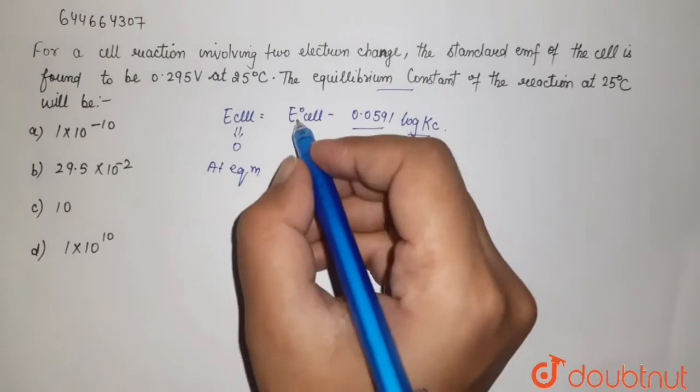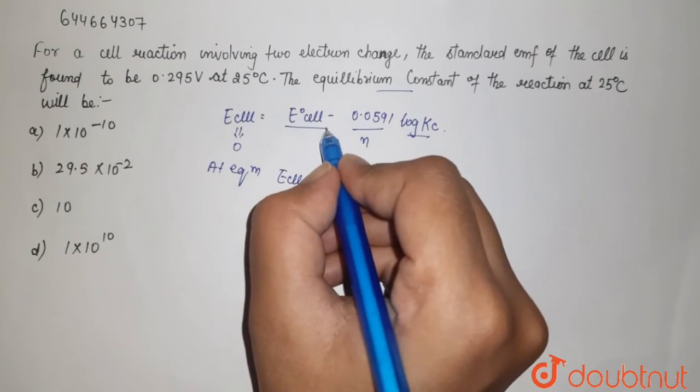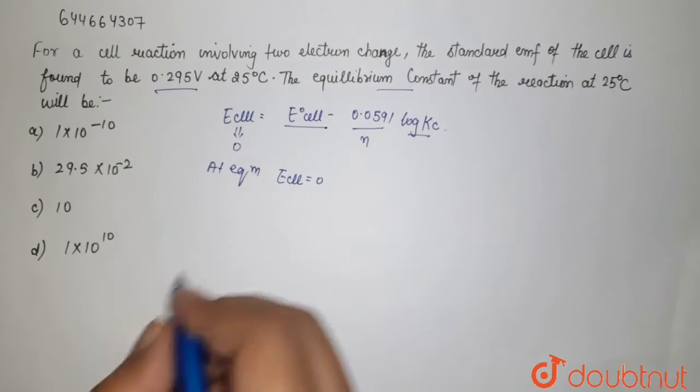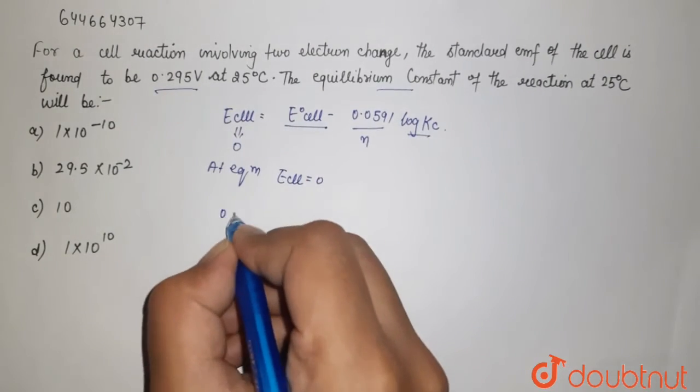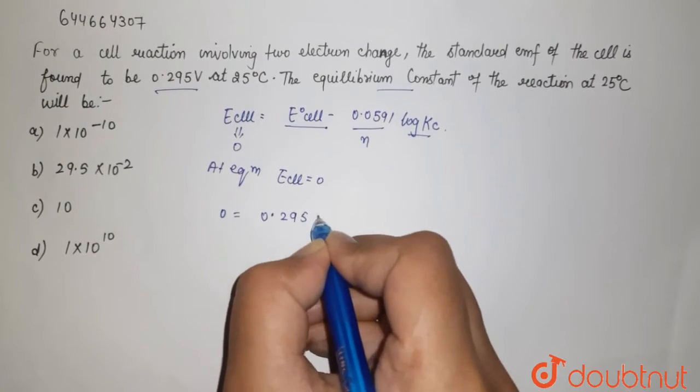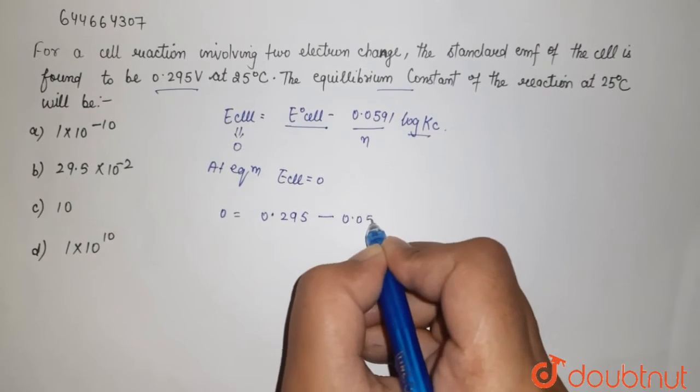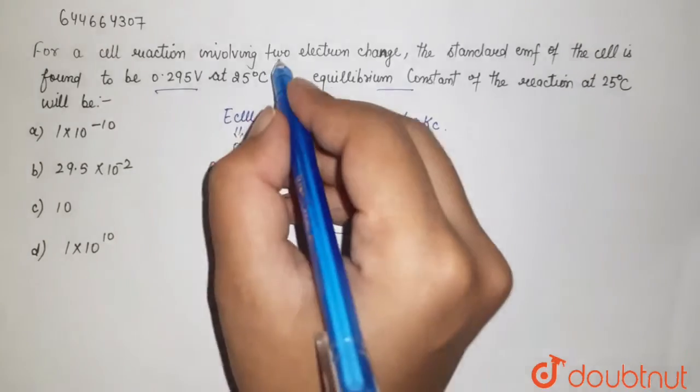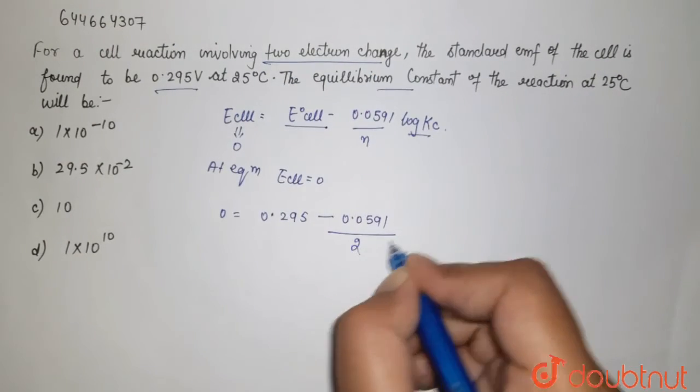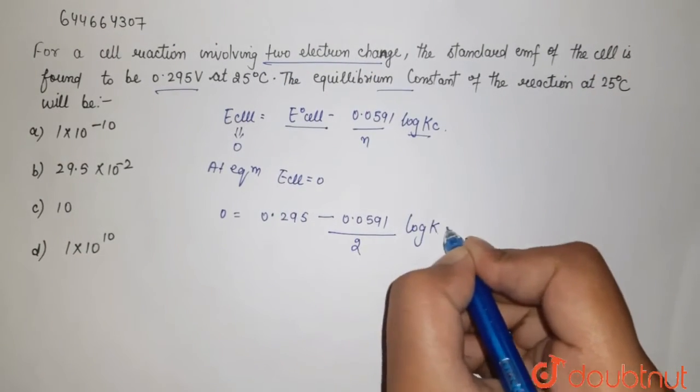Now if you see, we have given the information of E naught that is 0.295. It is 0 which is equal to 0.295 minus 0.0591. In the question, we have given that it is 2 electron change. So it is 2 log Kc we need to find.